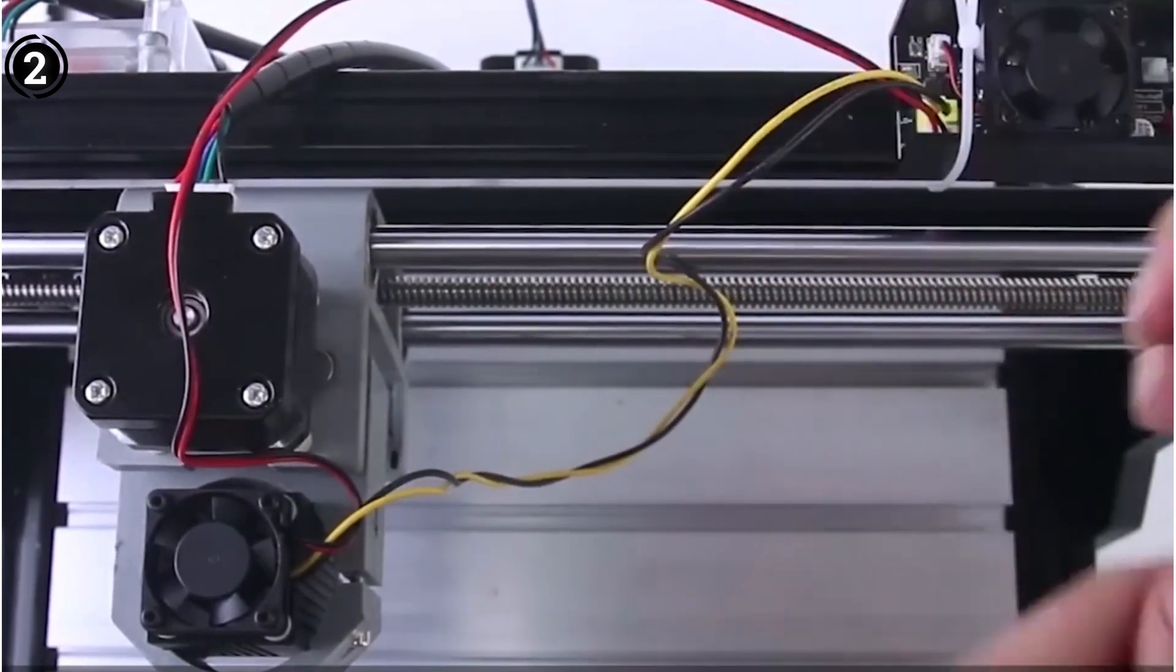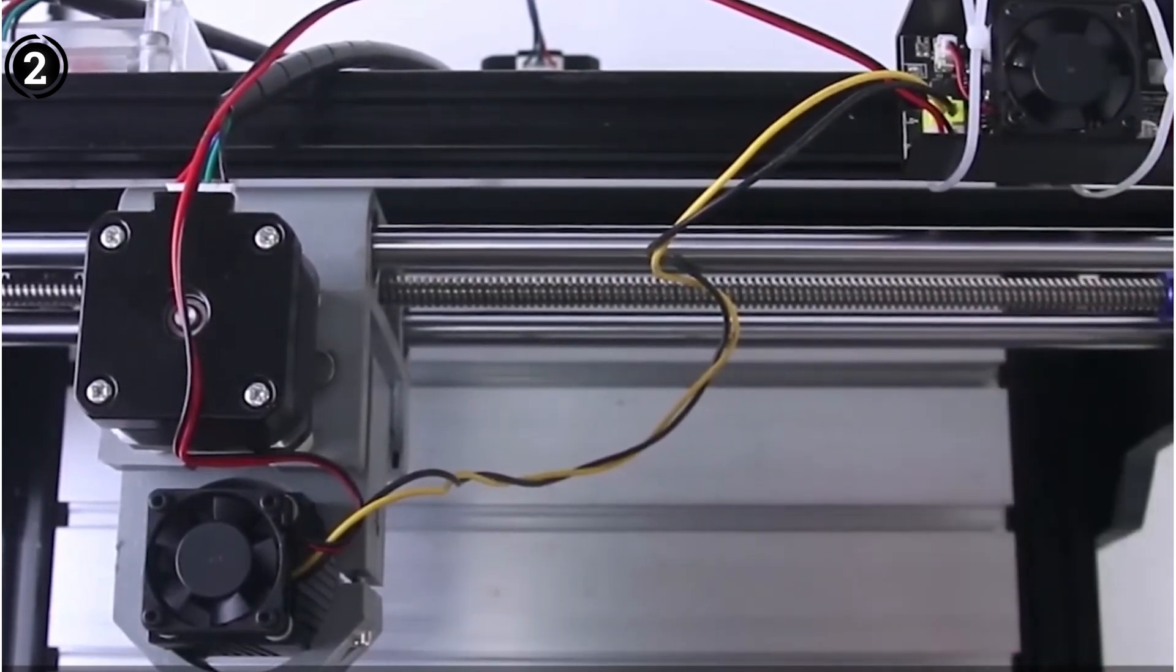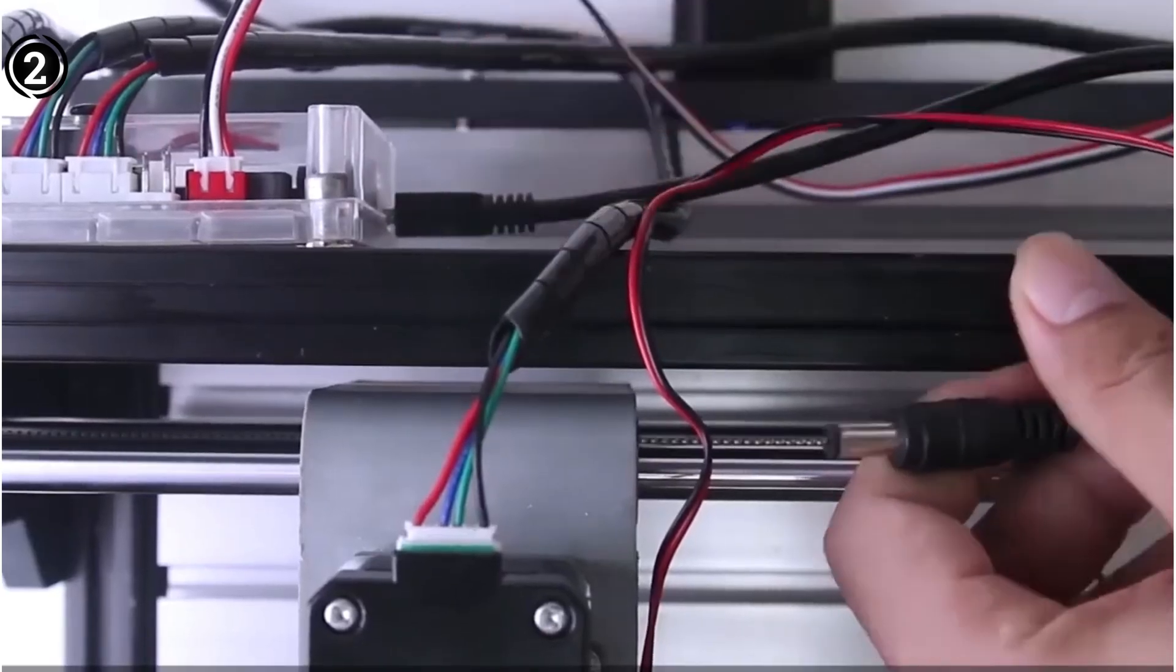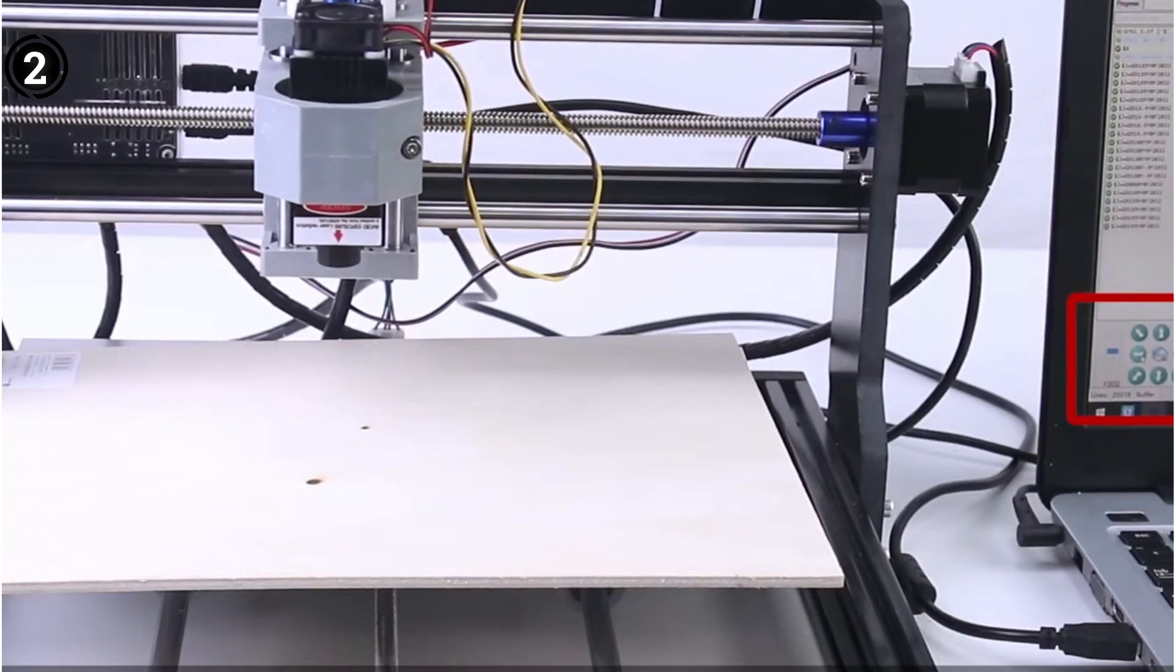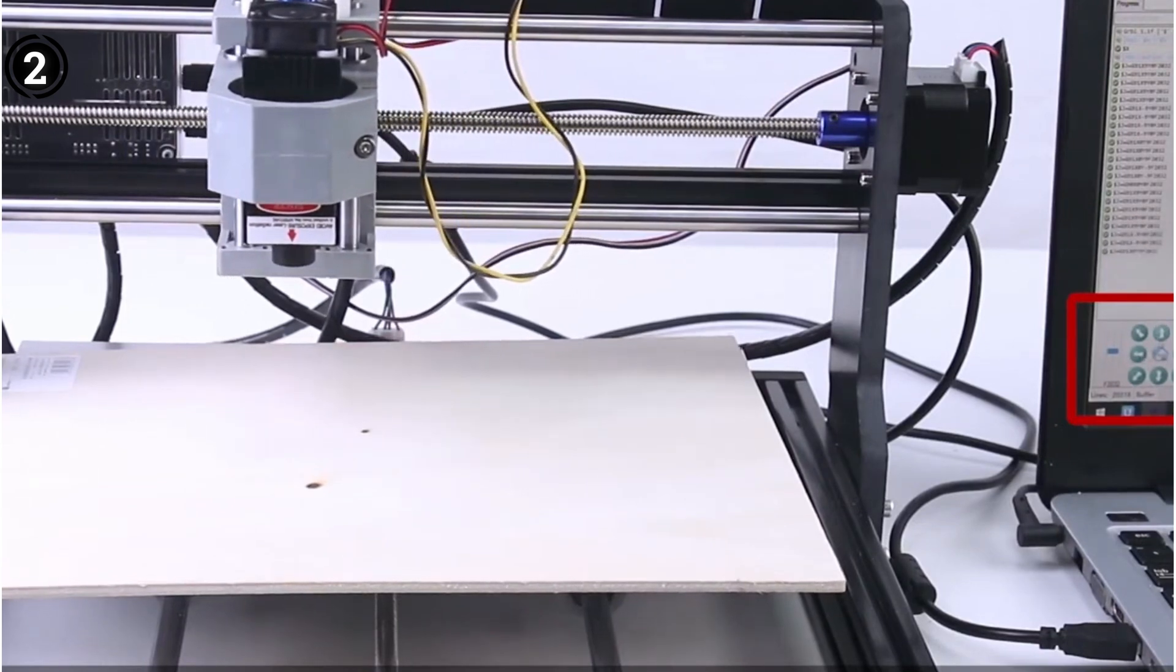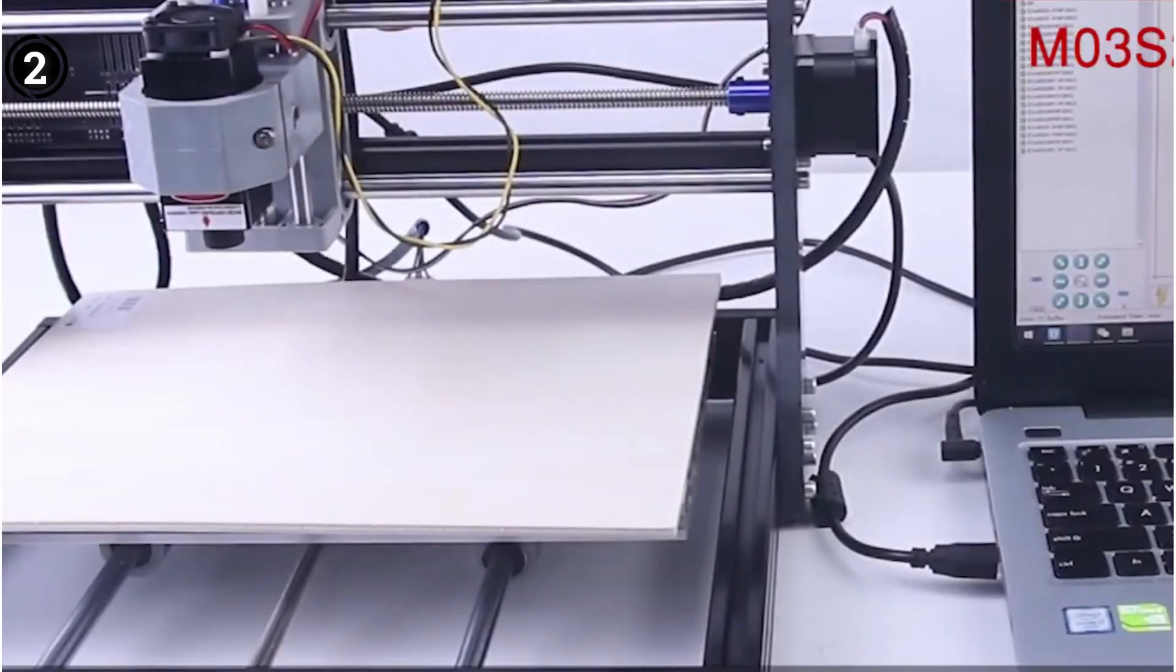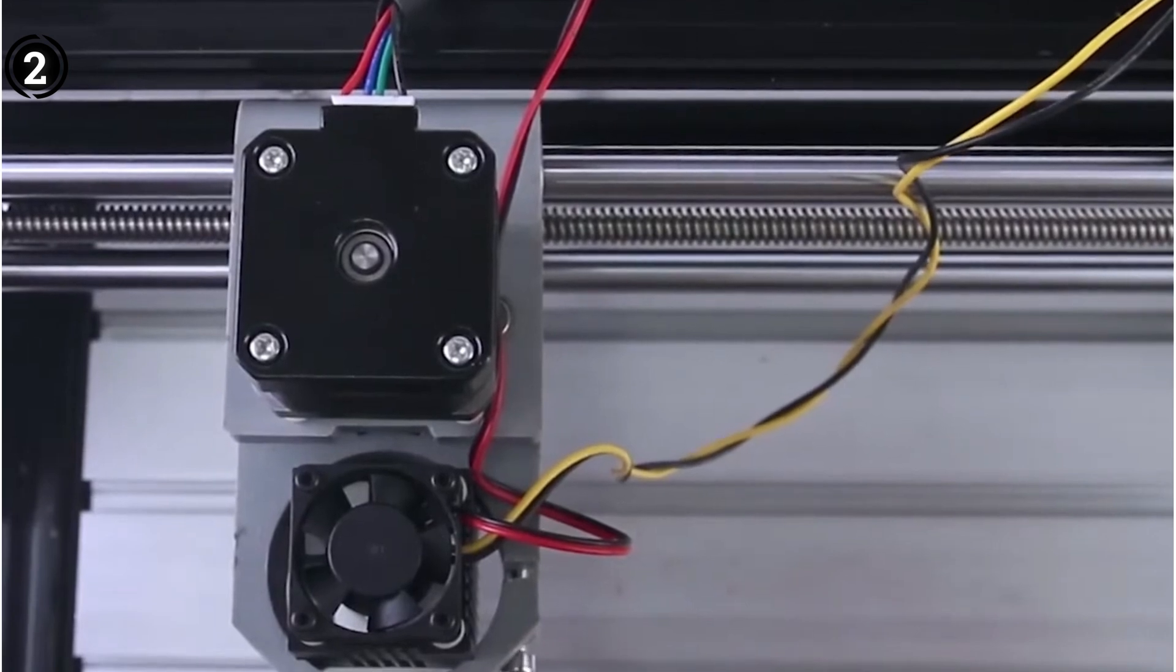Operating this 3018 Pro engraver is made simple with compatibility with GRBL software. The Windows operating system support extends to versions like Windows XP, Windows 7, Windows 8, and Windows 10. While designed with beginners in mind, it's essential to possess knowledge in creating code for optimal usage. You can employ various software options like Carbide Create, ArtCam, MeshCam, Fusion 360, and Inkscape to generate code. For added convenience, this CNC machine is equipped with an offline manual controller. Installation is a breeze thanks to the comprehensive paper instruction manual and USB flash drive.